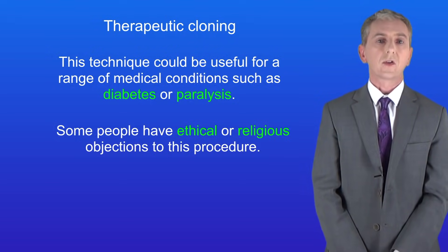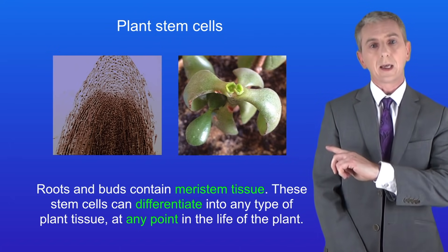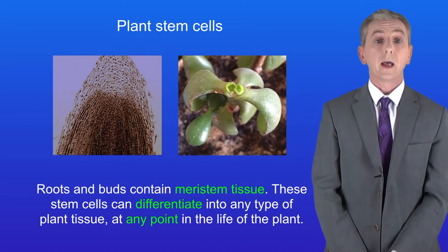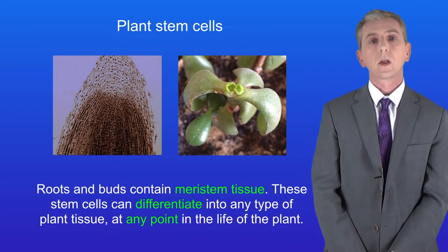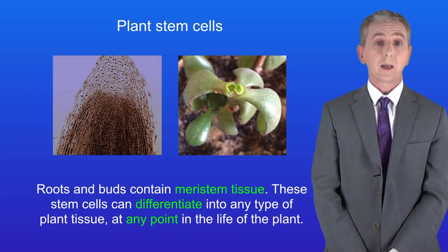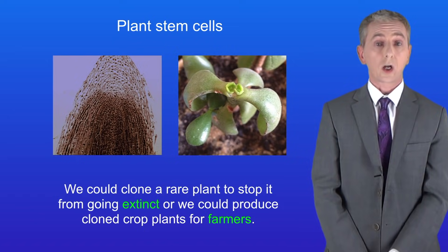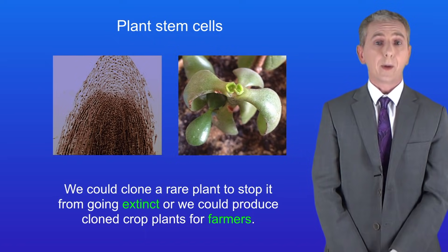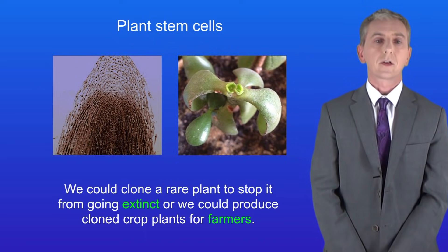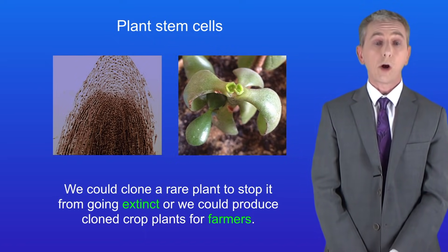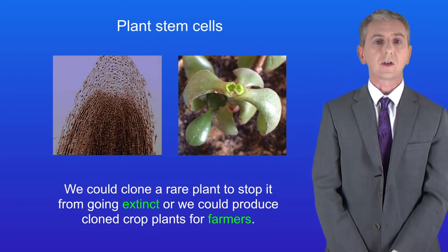We can also find stem cells in plants. The tip of a root and a plant bud, as seen under a microscope, contain meristem tissue. These stem cells can differentiate into any type of plant tissue at any point in the life of the plant. We can use meristem tissue to produce clones of a plant quickly and cheaply — for example, to clone a rare plant to stop it going extinct, or to produce cloned crop plants resistant to diseases for farmers.